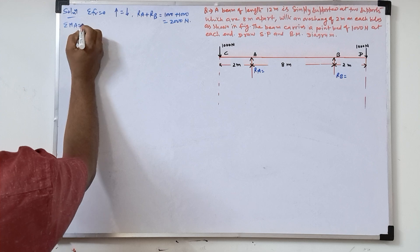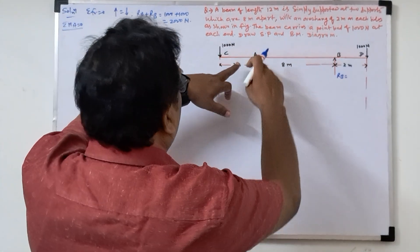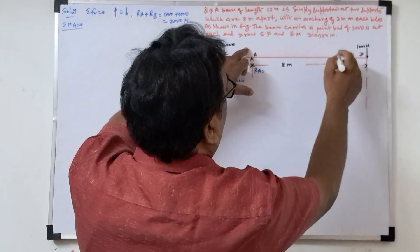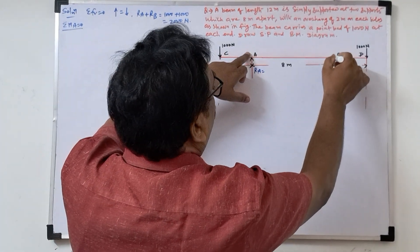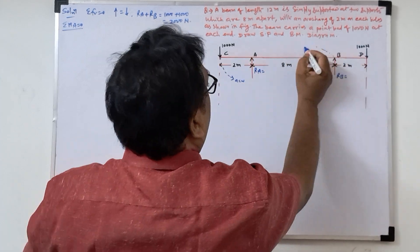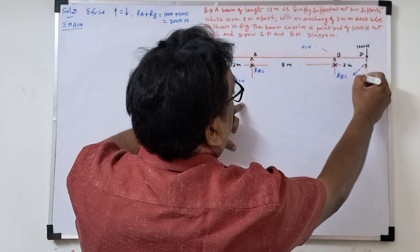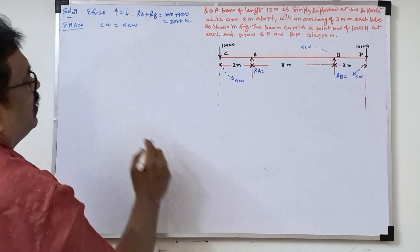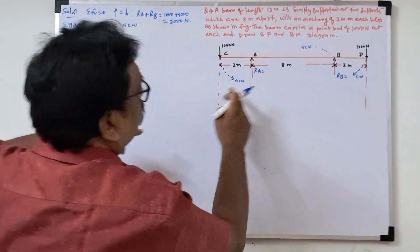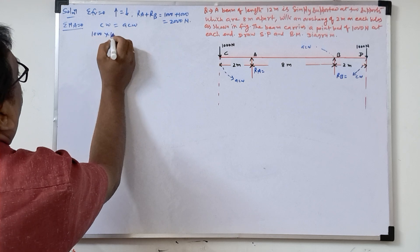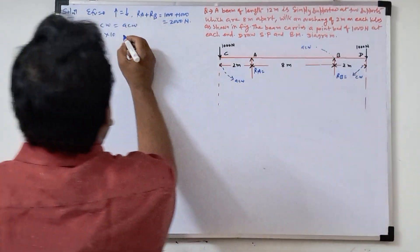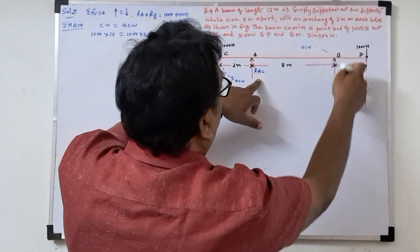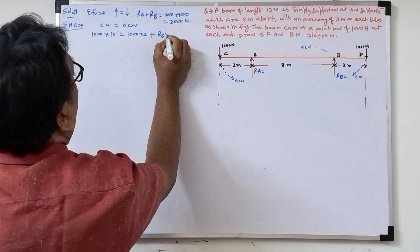Now we will take moment about A. These are the equilibrium equations. With respect to A, this rotation is anti-clockwise, this rotation is also anti-clockwise, and this rotation is clockwise. So total clockwise is equal to total anti-clockwise. Taking moment about A, what is the clockwise moment? Thousand into total distance 10, so we will write thousand into 10. Anti-clockwise: thousand into 2, plus Rb into 8 from this point.